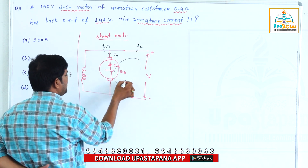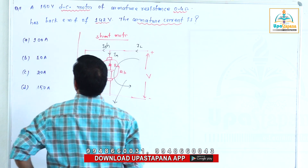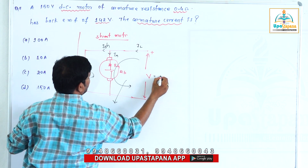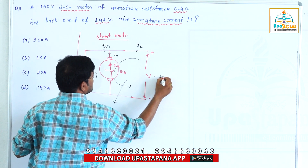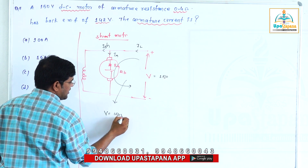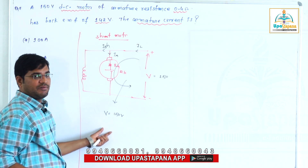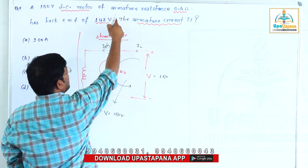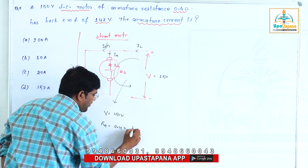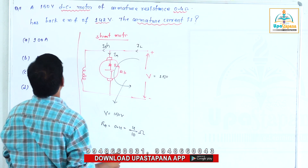Now I know the KVL equation. First, the data: the supply voltage V is 150 volts. The armature resistance is 0.4 ohms, which is 4 by 10 ohms.